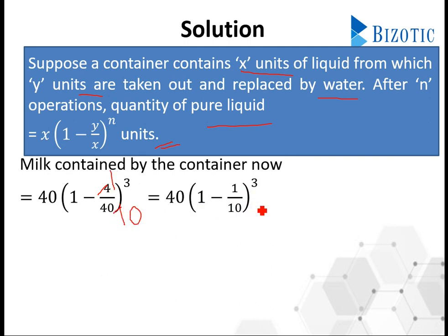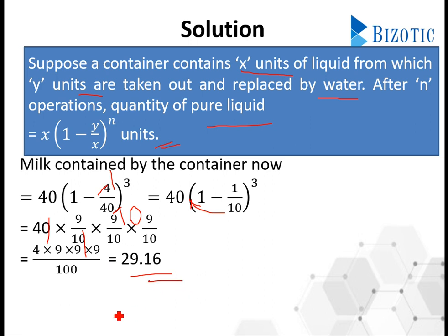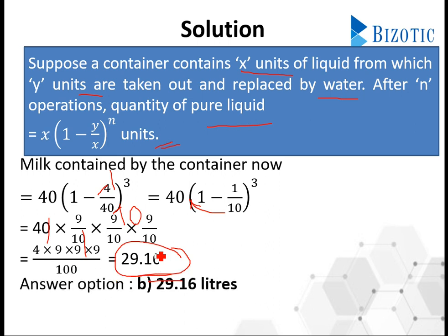So milk contained by the container is equal to 40 into (1 minus 4/40) to the power 3, which simplifies to 40 into (1 minus 1/10) to the power 3. Subtracting gives 9/10, so 40 into (9/10)³. That can be written as 40 into 9/10 into 9/10 into 9/10, which finally gives us 4 into 9 into 9 into 9 divided by 100, equal to 29.16 liters.